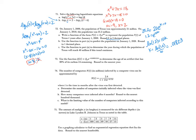Use the function from part A to predict the population on January 1st, 2020, rounded to one decimal place. Compute p(20) equals 21·e^(0.01823 times 20). That gives approximately 30.2 million people.